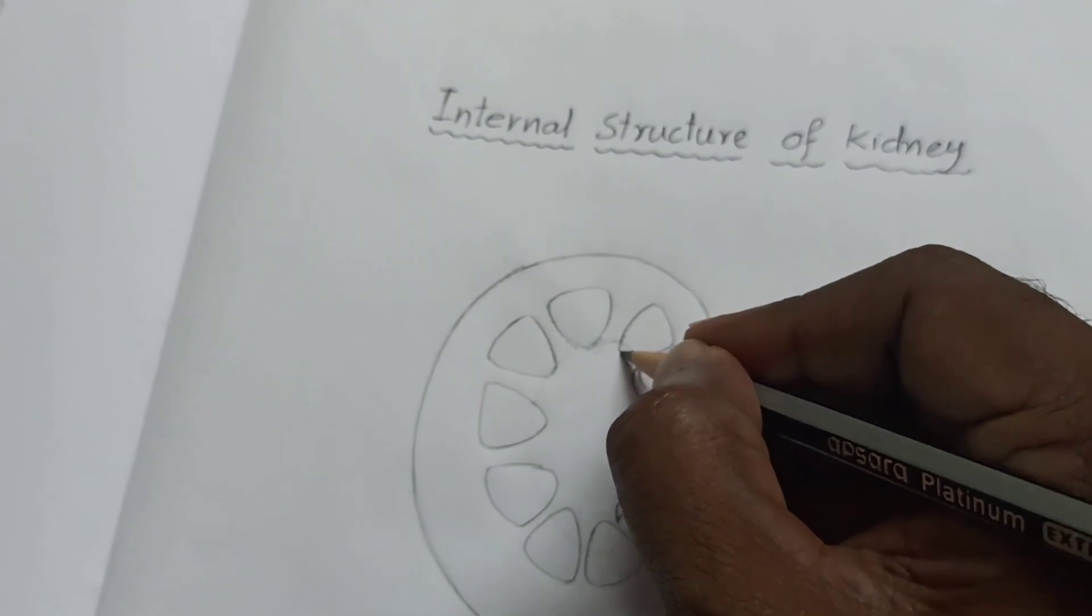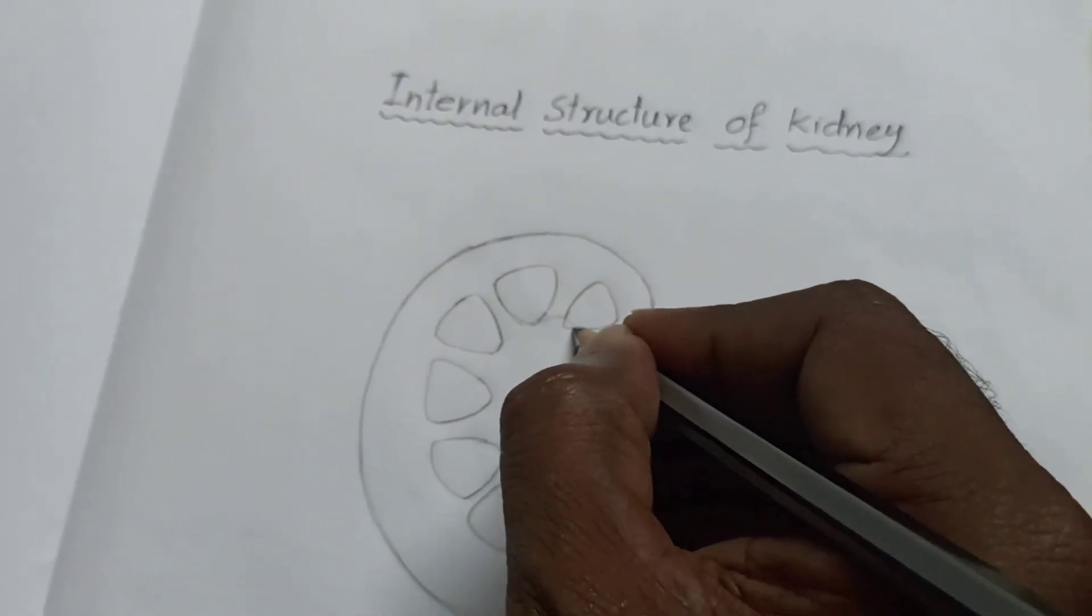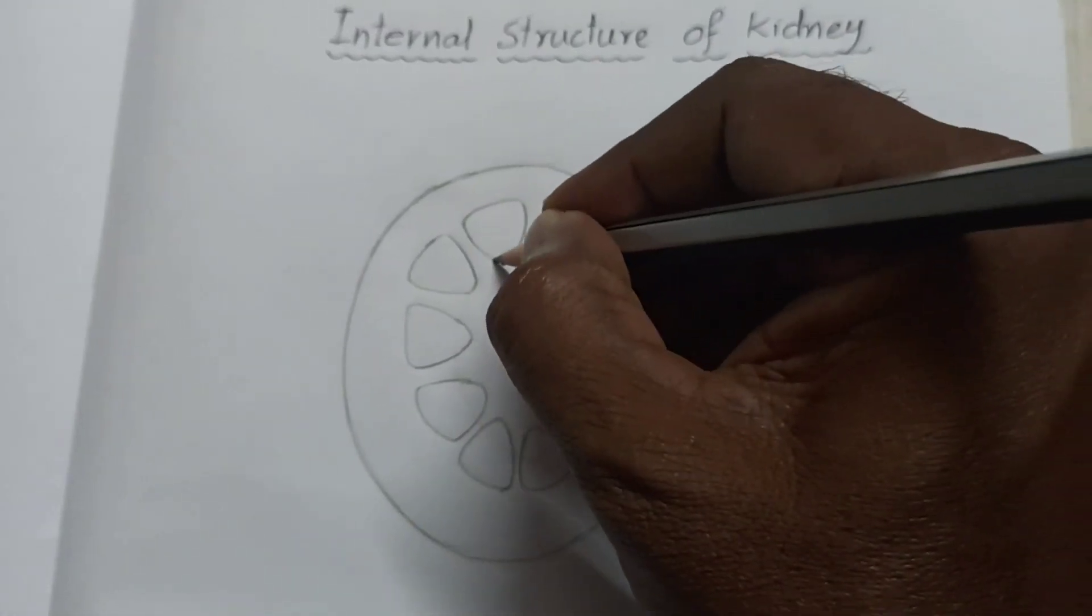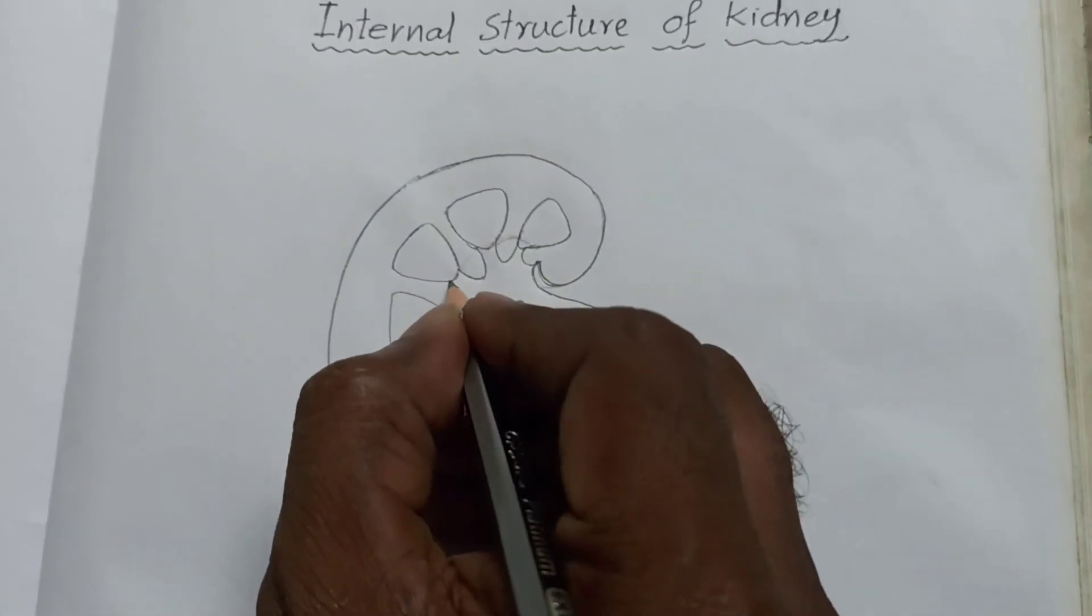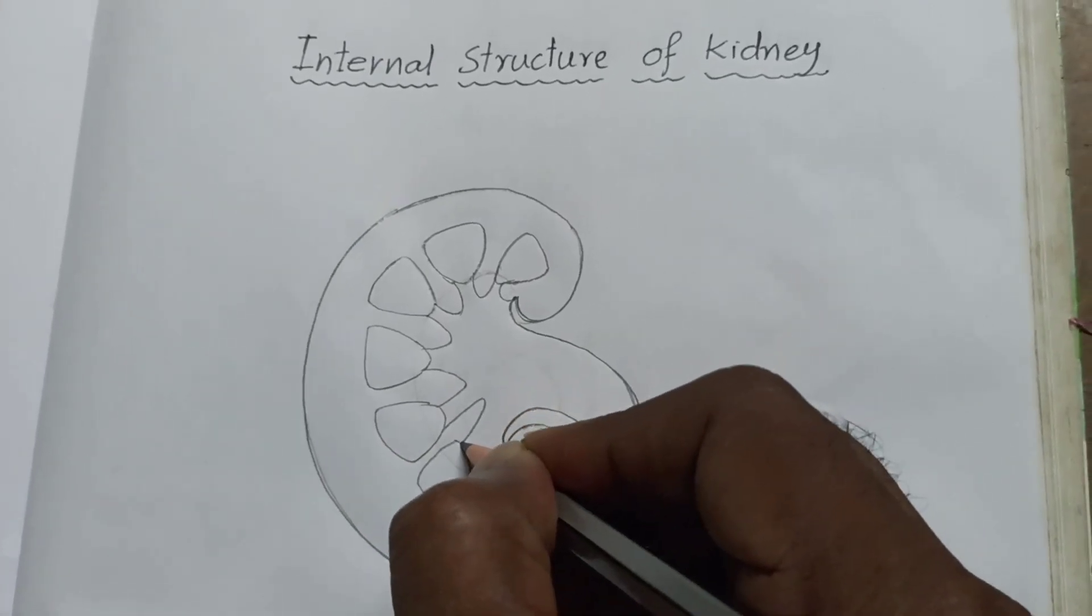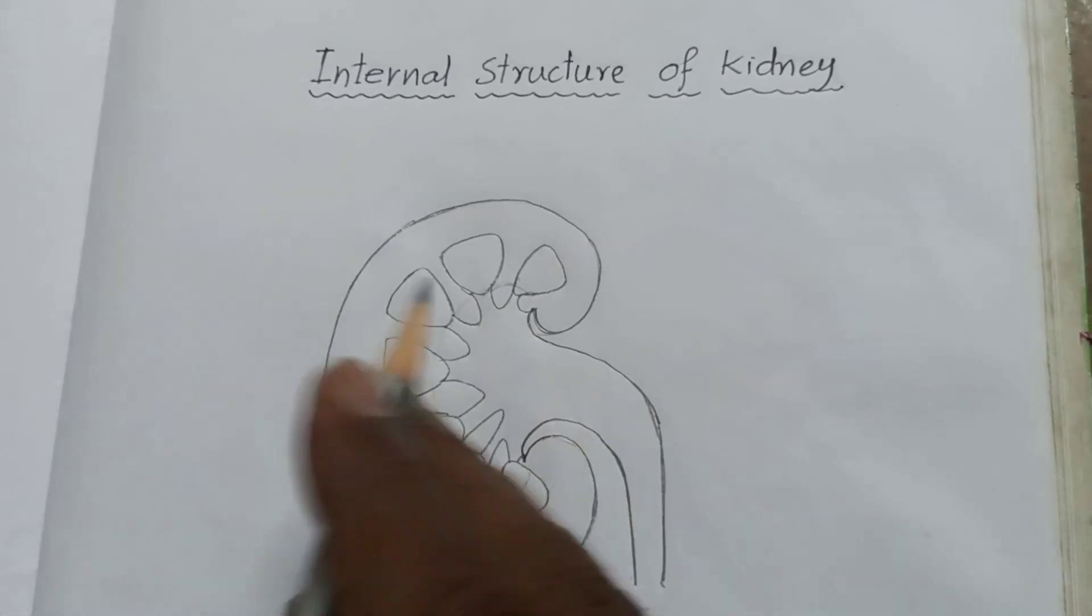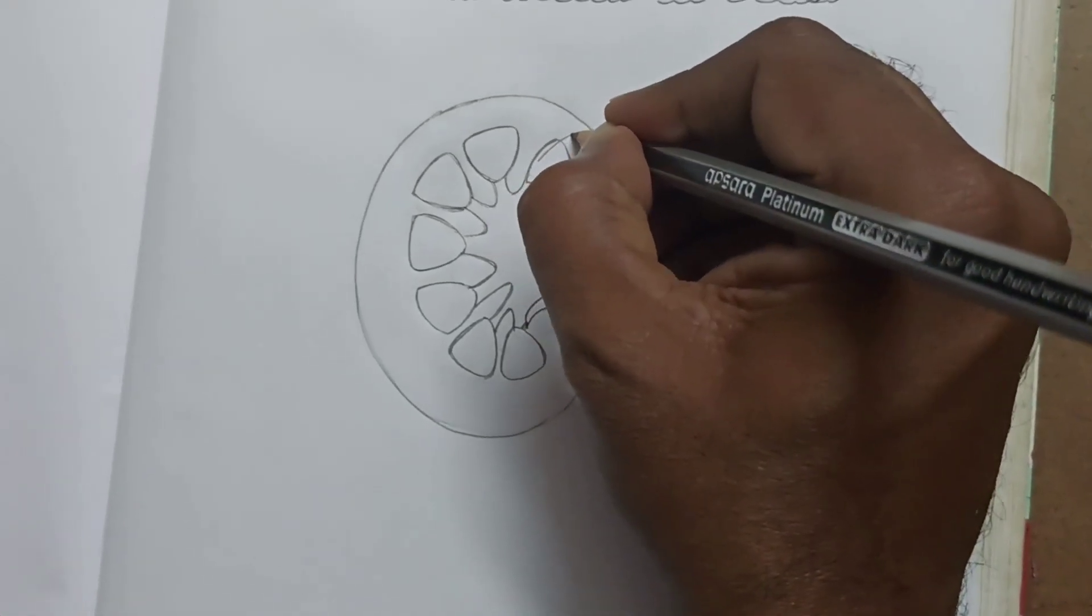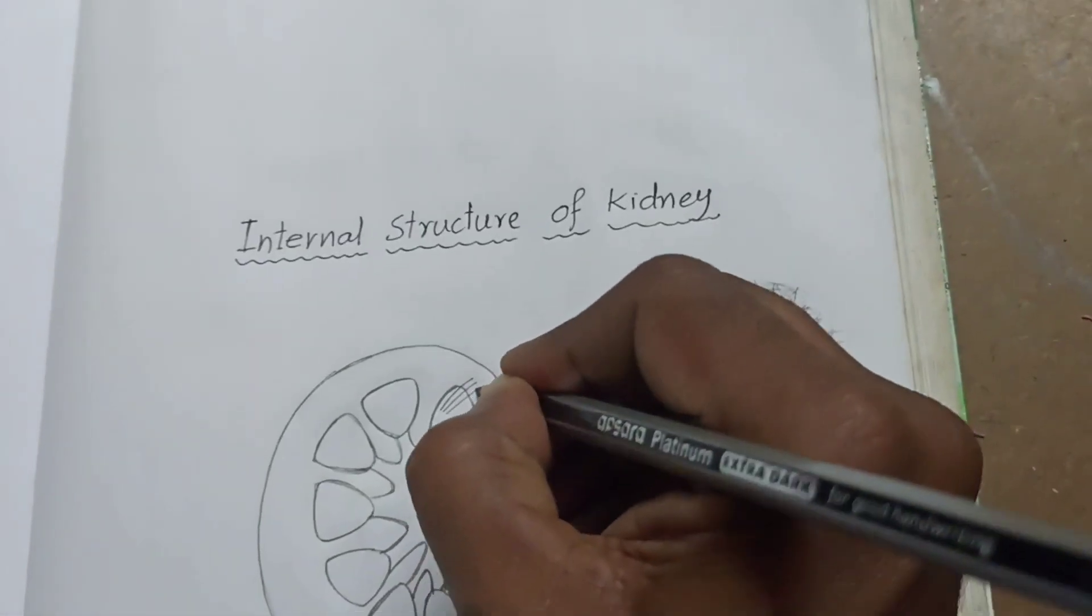Completed. Now these are the pale inner zone known as medulla. Now I am drawing calyx. You have to connect this pale yellow regions like here, like this. Now I am drawing collecting ducts.